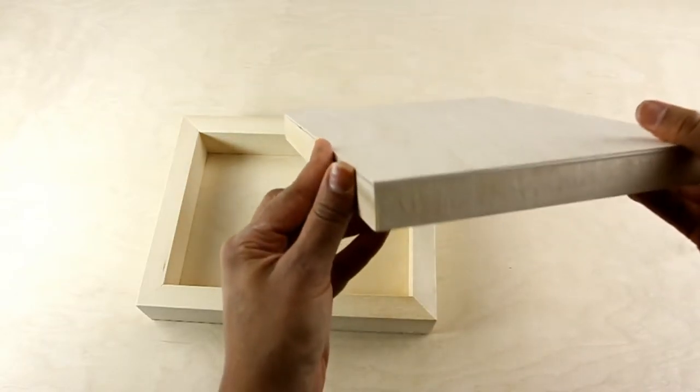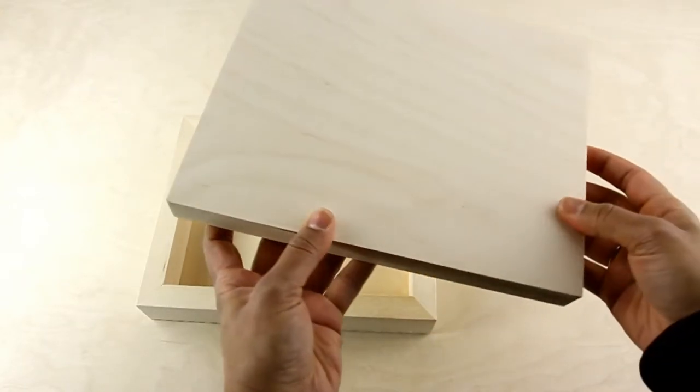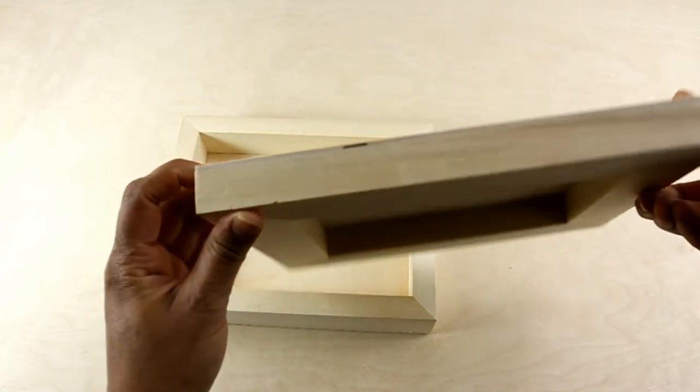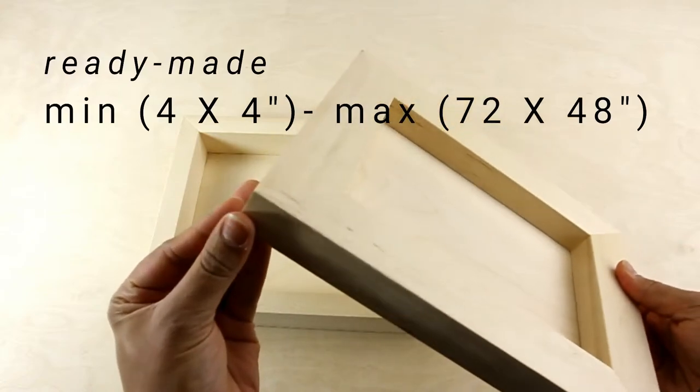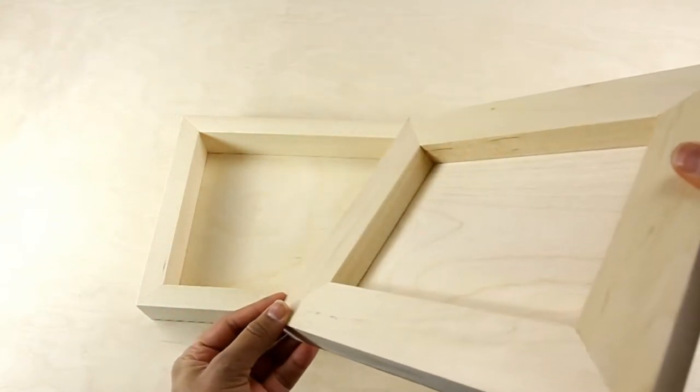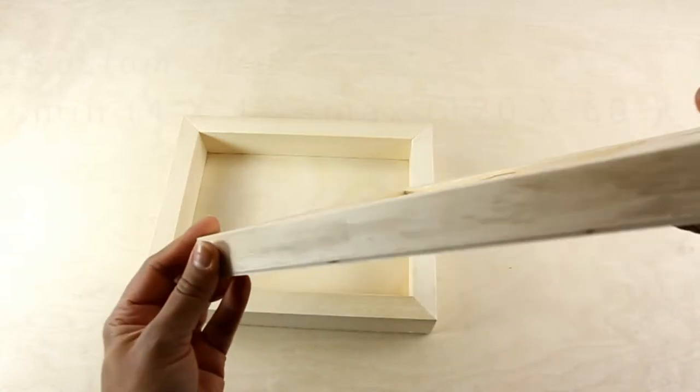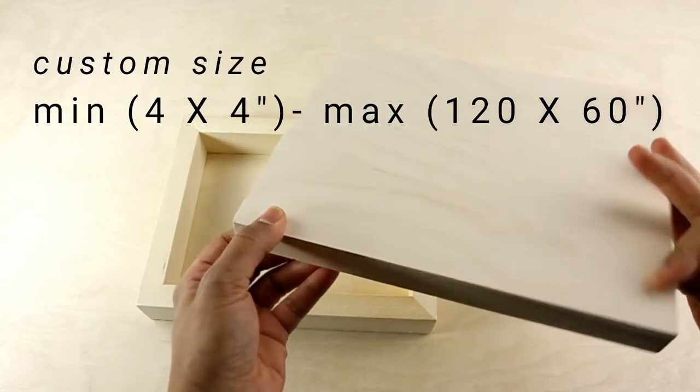Rectangular wood panels are composed of smooth birch wood surface and the back is supported with similar material. Ready-made sizes are available from a minimum of 4x4 to a maximum of 72x48 inches. Custom sizes can be customized from 4x4 to a maximum of 120x60 inches.